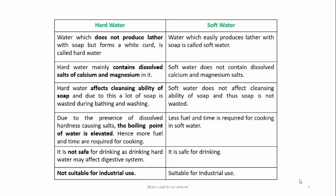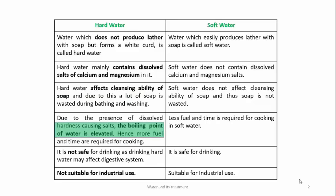What is the difference between hard water and soft water? Hard water does not produce lather; it forms a precipitate or curd. It contains dissolved salts of calcium and magnesium, and it affects the cleansing ability of soap. Due to the presence of calcium and magnesium ions — as we have already learned about colligative properties — the boiling point of water gets elevated. It is not safe for drinking and not suitable for industrial use.